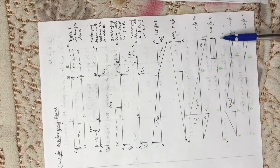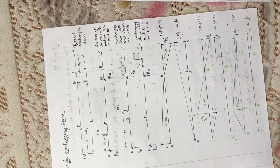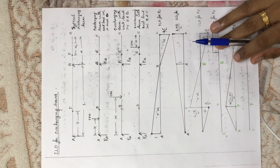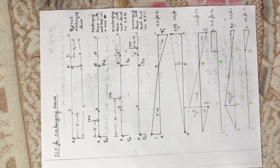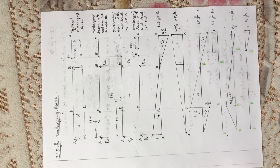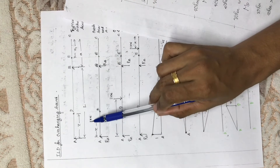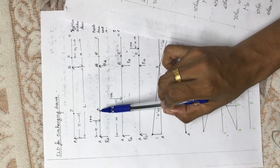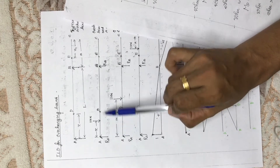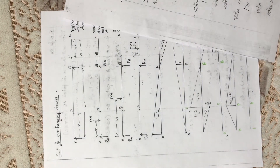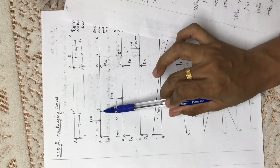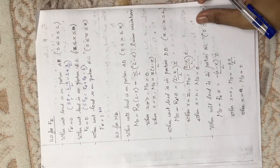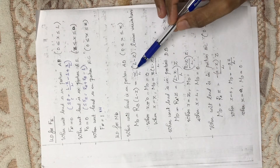Next is the influence line diagram for the bending moment at D. We have to find the various values of moment at D as the unit load moves from the starting point to the end point, spanning all spans. For the unit load in span AD, the bending moment at point D is simply Rb into (l minus z), where z is the distance and (l minus z) is the remaining length. Since this moment is in the anticlockwise direction, it is positive — giving the value of moment at D as s/l into (l minus z).